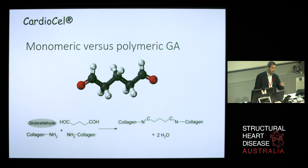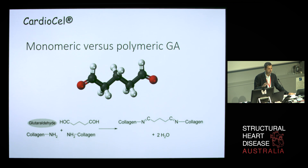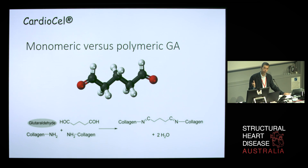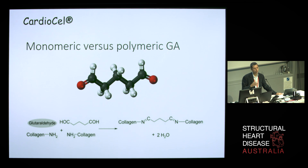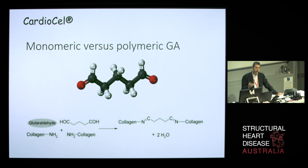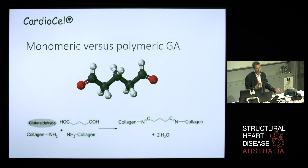Talking about the CardioCell, this is the bio-scaffold chapter of that talk. CardioCell is a bovine pericardium that is treated with a sophisticated treatment. The first stage is treatment with glutaraldehyde. Glutaraldehyde has been used historically for treating all pericardium patches — bovine, equine, human — and the glutaraldehyde that is used is polymeric. Here you have a representation of one monomer of the polymeric glutaraldehyde.